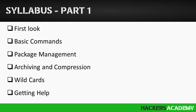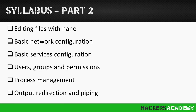Part 2 is when we dig a little bit deeper. We'll start with something light - I'll introduce you to a text editing tool called Nano. Then we're going to look at some basic network configuration. Following that, we'll start having some fun configuring services such as SSH and web service - you'll be turning your Linux box into a web server and an SSH server. Then we'll look at users and groups and how to control those along with permissions. Then process management - how to control processes, stop them, background them. And last but not least, output redirection and piping, with practical examples from my day-to-day work as a pen tester.